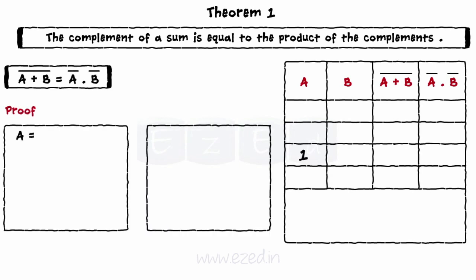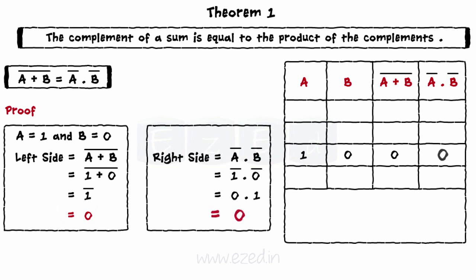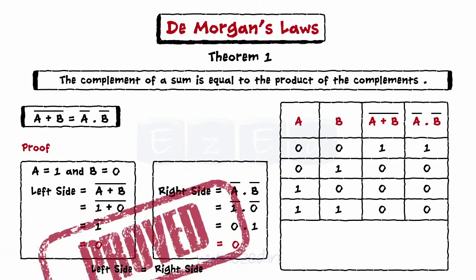Let's prove it now. Assume a equals 1 and b equals 0. The left side equals (1 plus 0) bar equals 1 bar equals 0. The right side equals 1 bar dot 0 bar equals 0 dot 1 equals 0. For all the possible combinations of inputs, we get left side equal to right side.